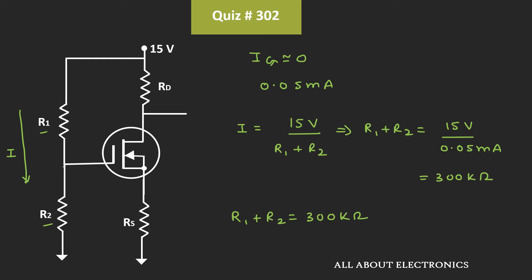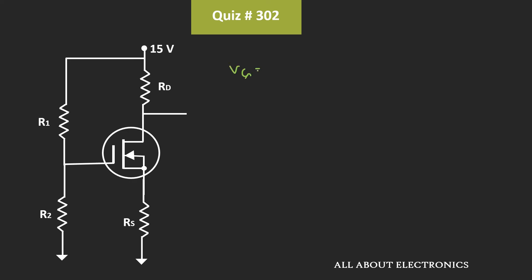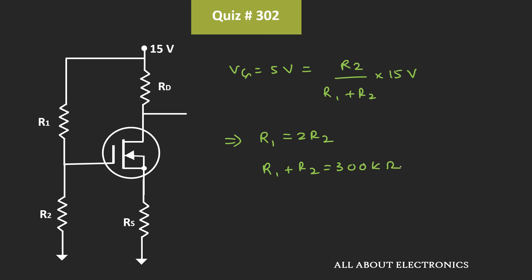We have also been given the required gate voltage VG equal to 5V. The ratio of R1 and R2 must be such that VG equals 5V. So 5V equals R2 divided by (R1 plus R2) times 15V. Rearranging this expression, R1 is equal to 2R2. Since R1 plus R2 equals 300kΩ, we get 3R2 equals 300kΩ, which means R2 is equal to 100kΩ.